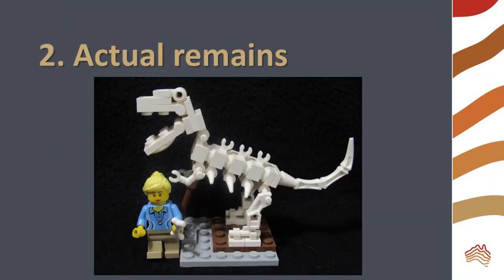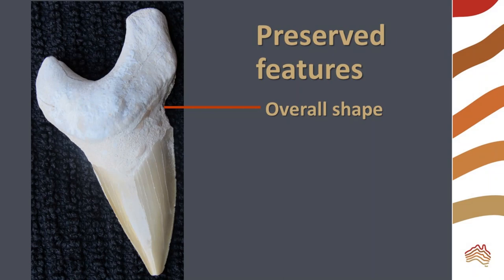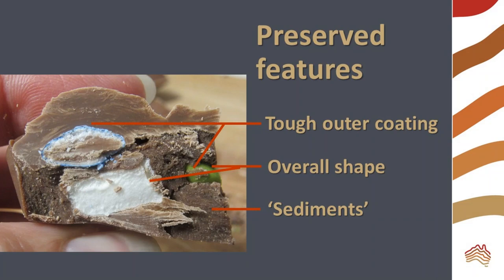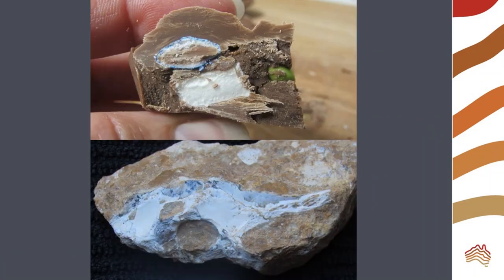Next we will look at actual remains. This fossil shark tooth has the original three-dimensional shape. It is covered in shiny tooth enamel and it still has a sharp edge. Teeth are very tough and are frequently fossilized. In our model we can still see the tough outer coating of the Smarties — the overall shapes are preserved. We also have the sediment, which is the chocolate in the model. Sediments can tell us about the environment where an organism lived. The backbone in the lower photograph is in limestone sediments — this animal fell into a mineral-rich freshwater pool when it died.